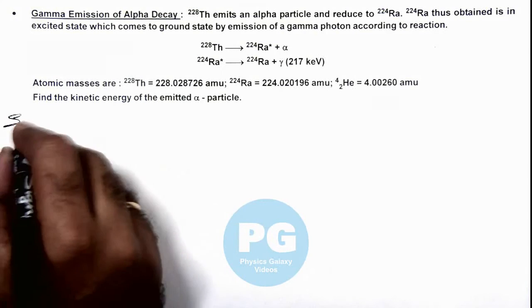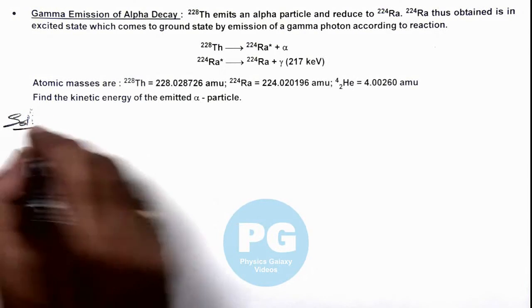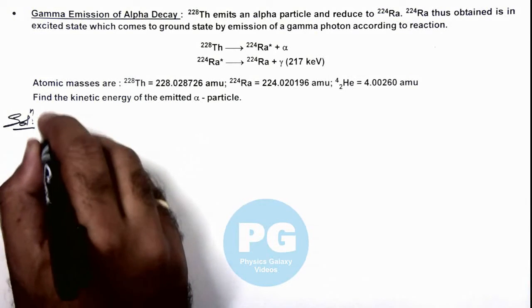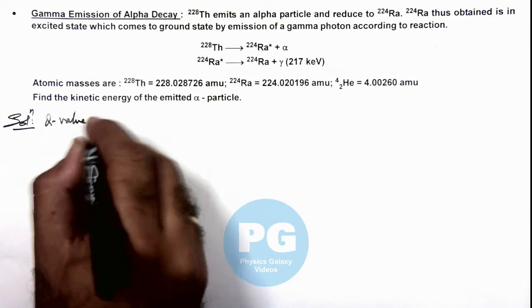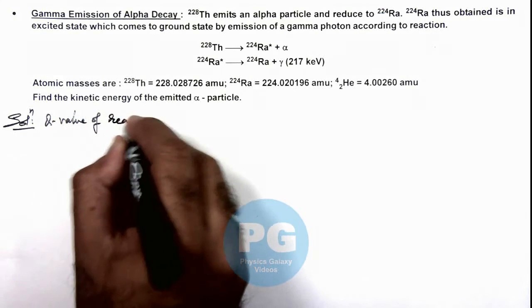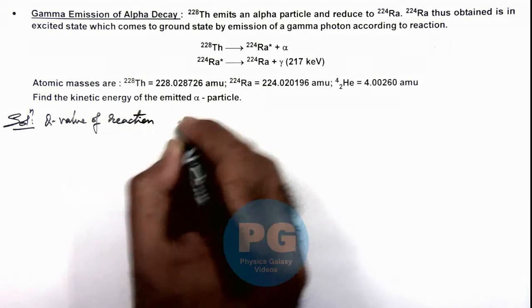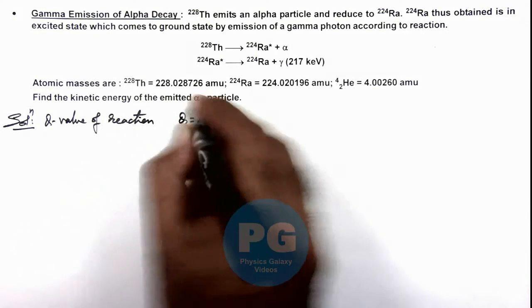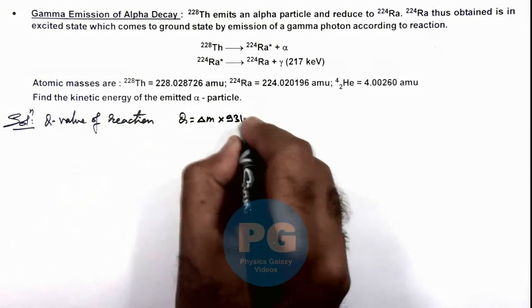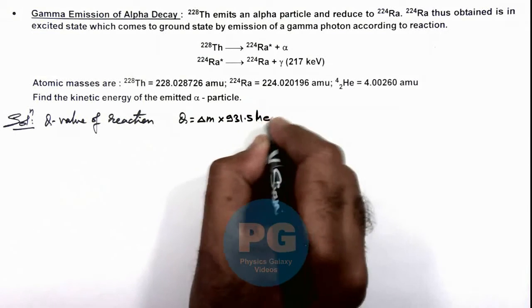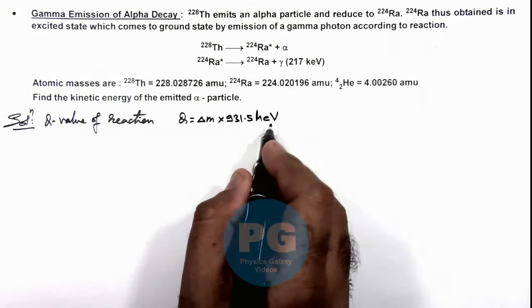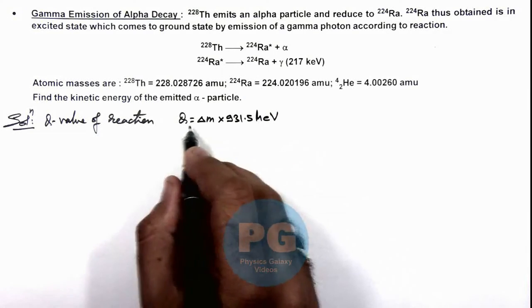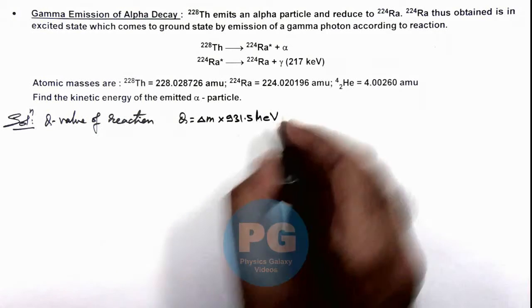In the solution, first we need to calculate the Q value of the reaction. The Q value of reaction can be directly written as Q equals delta m, mass defect, multiplied by 931.5 million electron volts, which is the energy released corresponding to one unit of mass defect.